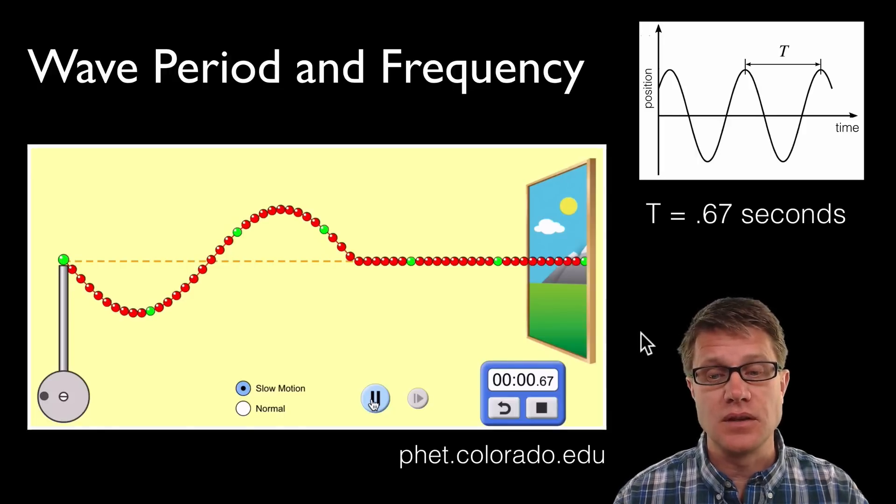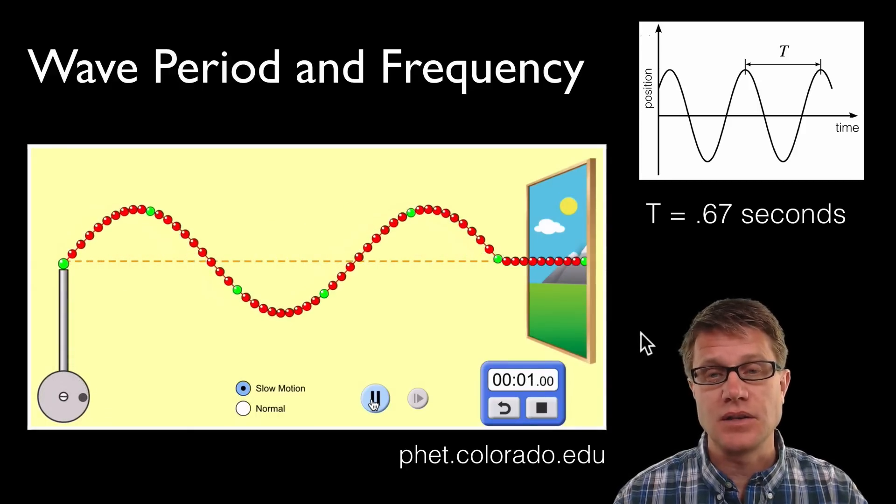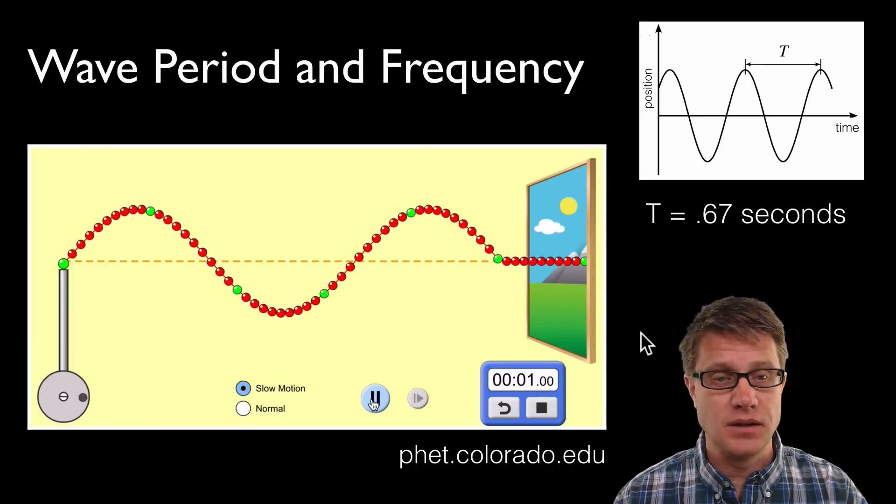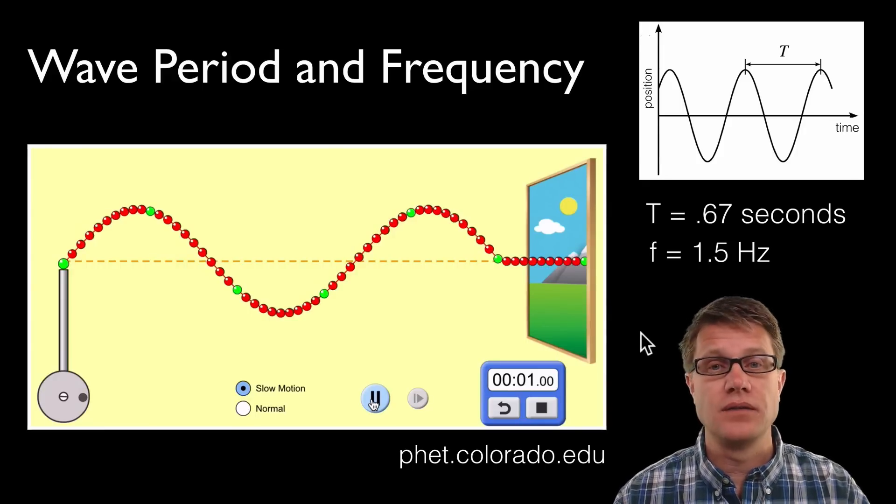Now if I want to figure out frequency using this simulation, what I could do is just let that clock run until it gets to one second. So I've stopped it here. That's one second. How many waves do you see on the screen? Well, I see one and a half waves, and so our frequency is going to be 1.5 hertz.